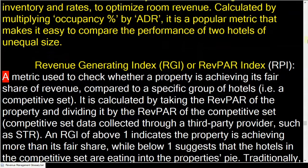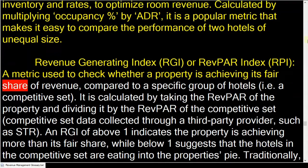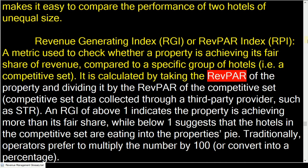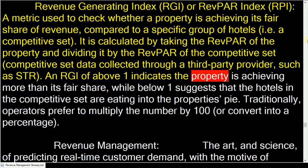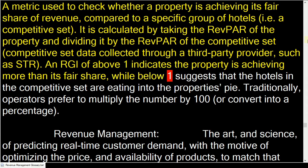Revenue Generating Index (RGI or RevPAR Index): a metric used to check whether a property is achieving its fair share of revenue compared to a specific group of hotels. It is calculated by taking the RevPAR of the property and dividing it by the RevPAR of the competitive set.